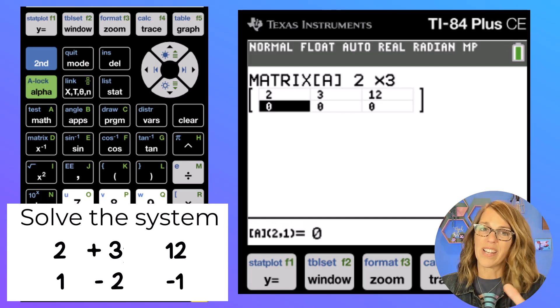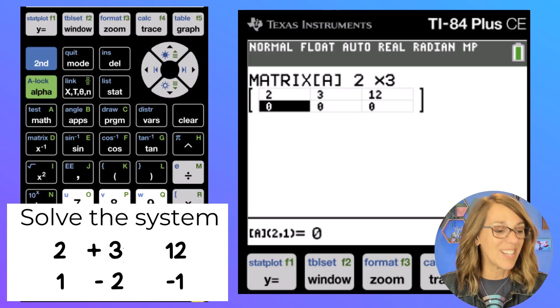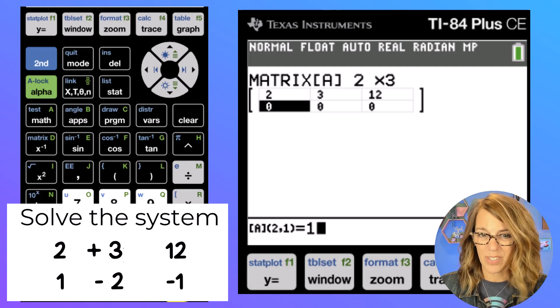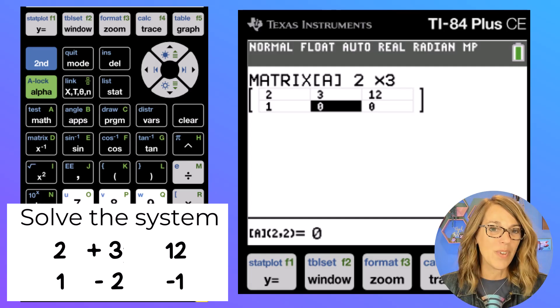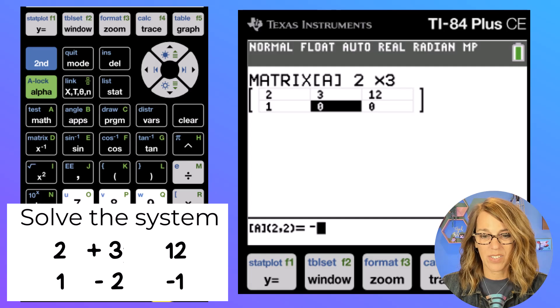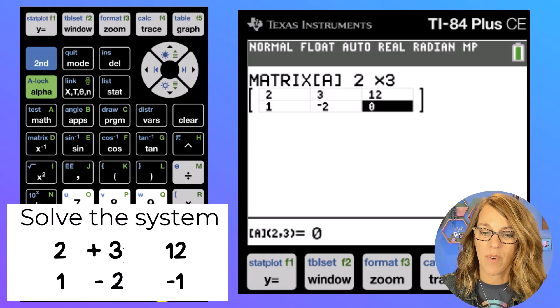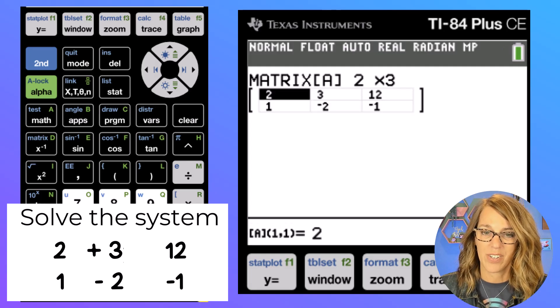These are the coefficients for my second equation. In that second equation, we had a one, since it was just x, one x. We had a negative two. So I'm going to use that little negative down by my enter key. So a negative two, enter. And on the other side of the equals, we had a negative one, negative one, enter.